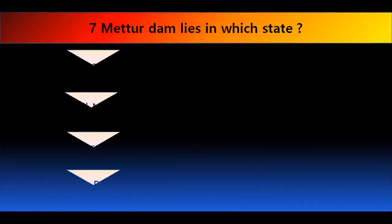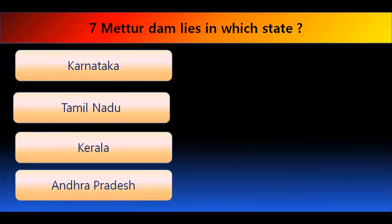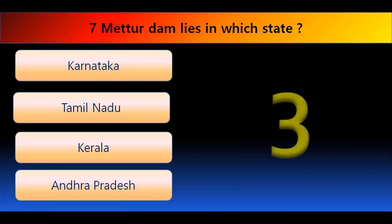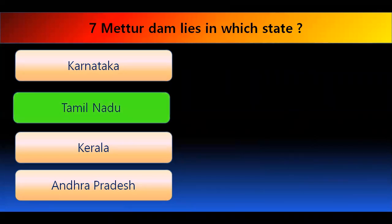Matur dam lies in which state? Options are Karnataka, Tamil Nadu, Kerala, or Andhra Pradesh. The right answer is Tamil Nadu. Actually, there are two dams on the Kaveri river: Krishan Raj Sagar dam and Matur dam. Matur dam lies in Tamil Nadu and Krishan Raj Sagar dam lies in Karnataka. There are disputes related to these dams and water.